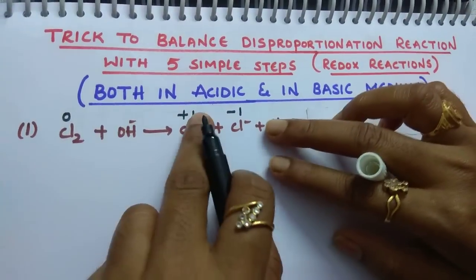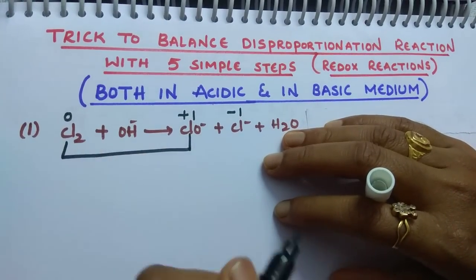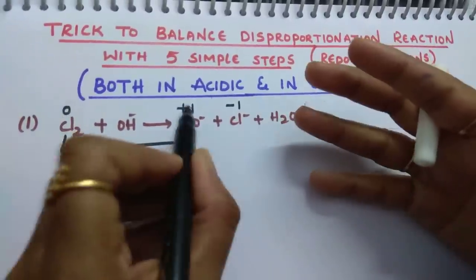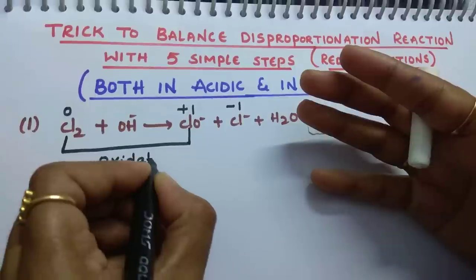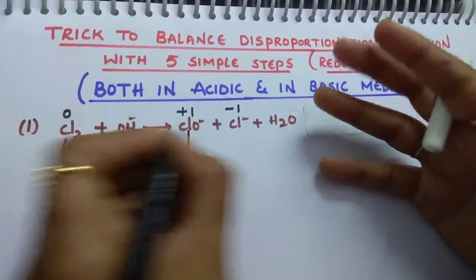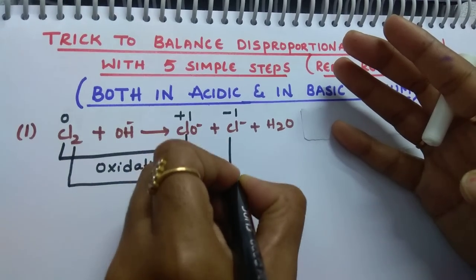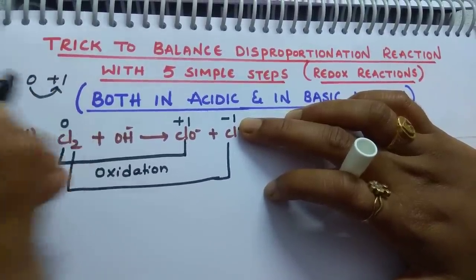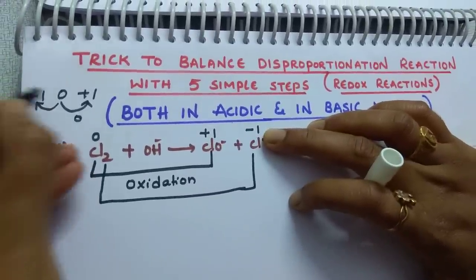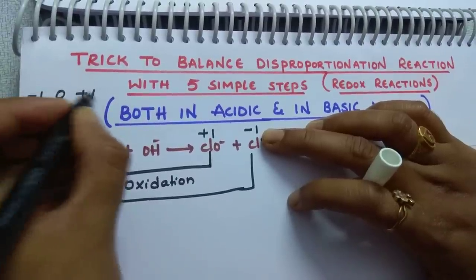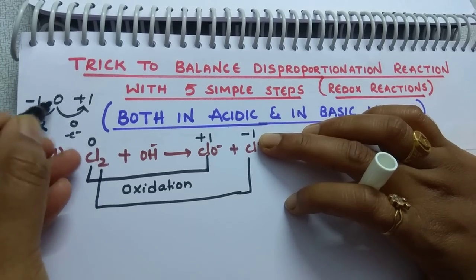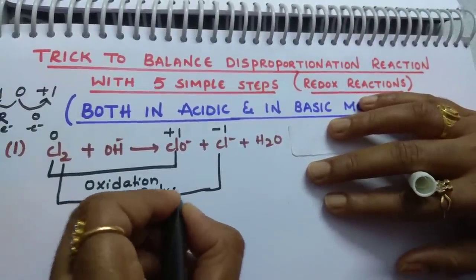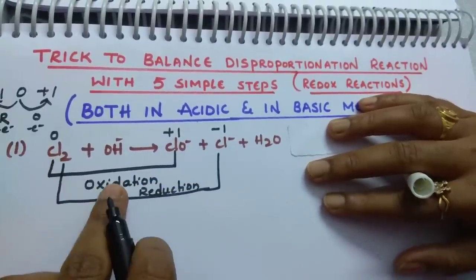Step number 1: find oxidation number. After that, identify which is undergoing oxidation — 0 to plus 1, that is an increase in oxidation number, so it is oxidation. Oxidation is loss of electrons. Here, Cl₂ is changed from 0 to minus 1 — that is a decrease in oxidation number, so it is reduction. So 0 to plus 1 is oxidation, and 0 to minus 1 is reduction. How does oxidation number increase? By loss of electrons. And how does it decrease? By gain of electrons.